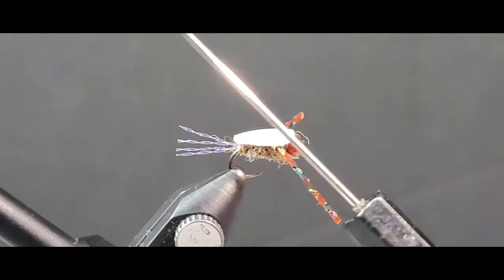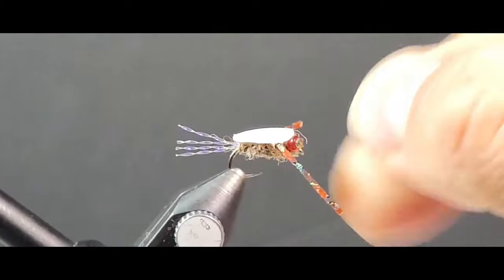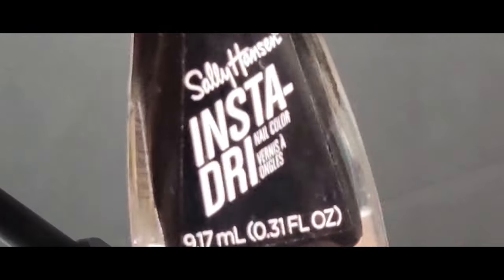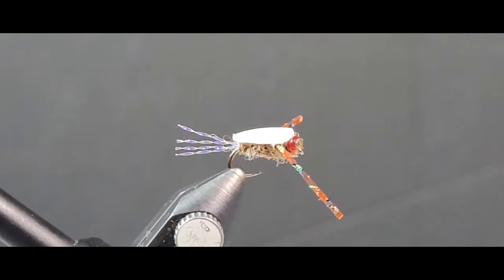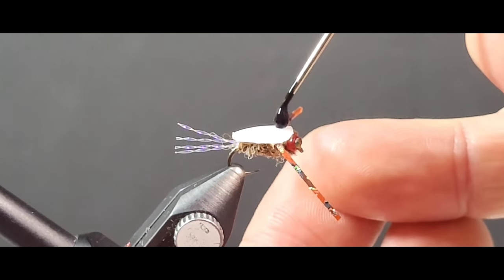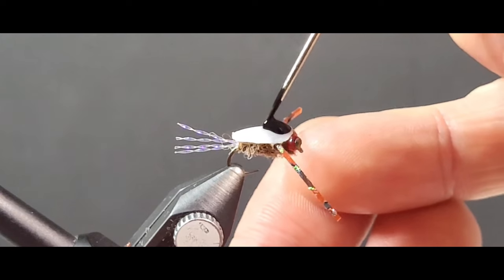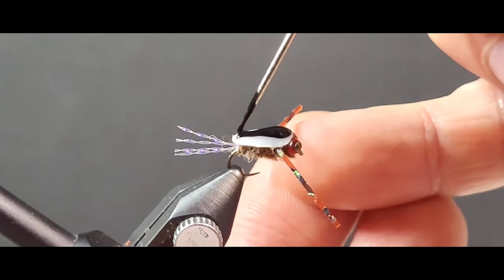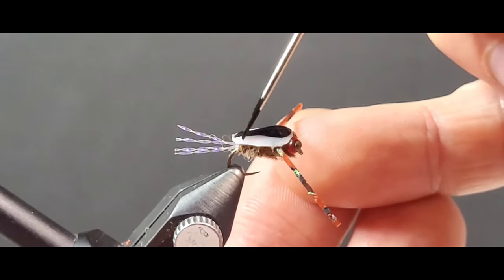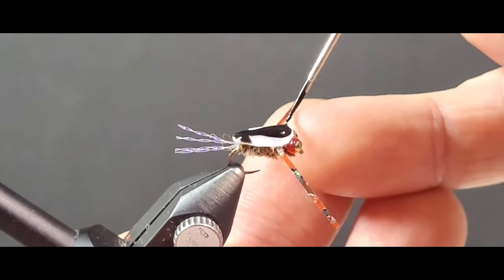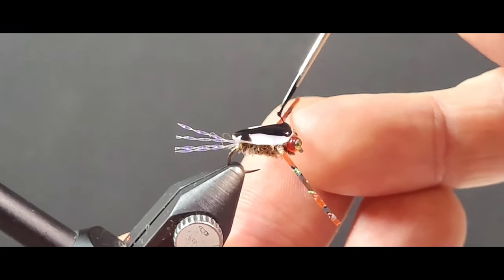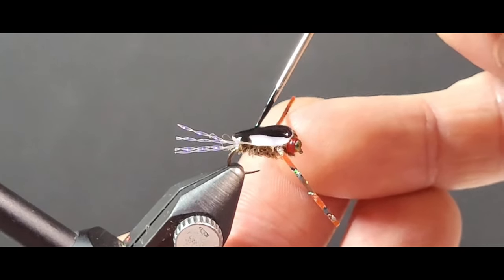For some of my original prototypes of this fly I actually used pistachio shells. You can use either very sharp scissors or a Dremel tool and get those down to a small tapered shape. Pretty cool. The pistachio shell adds a little bit of buoyancy to this fly in comparison to the acrylic nails.